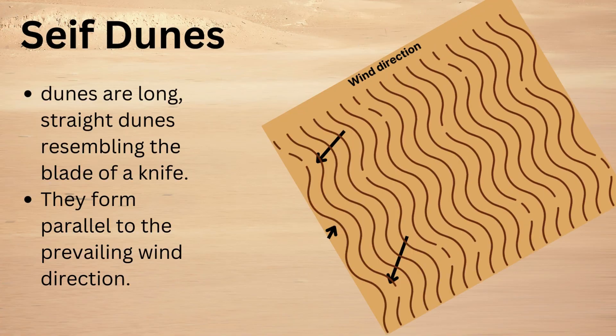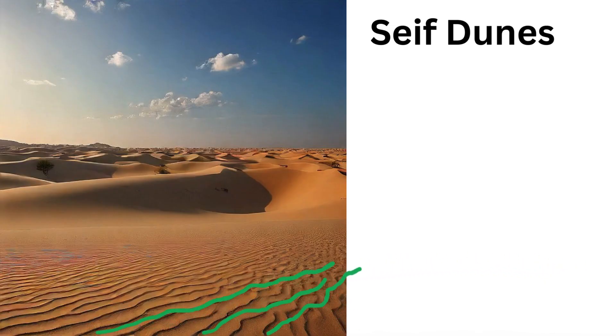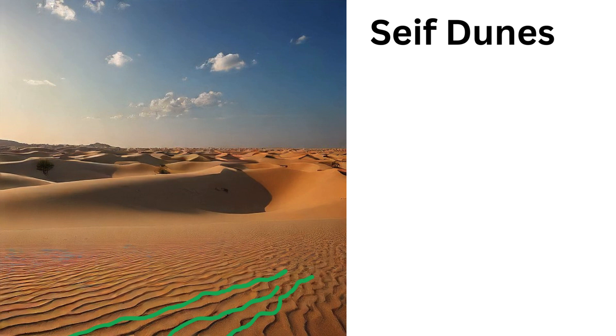Now it's time to reveal the other two types of dunes. The first one is seif dunes. These are long, straight dunes resembling the blade of a knife, and they form parallel to the prevailing wind direction. Here you can see the image — how sharp it is — and the formation in the wind direction. These dunes are common in deserts like the Sahara.